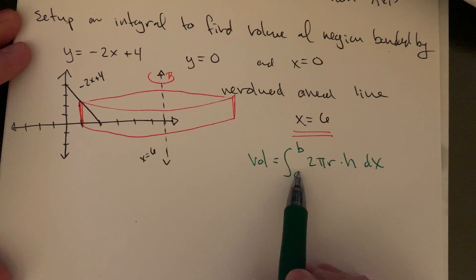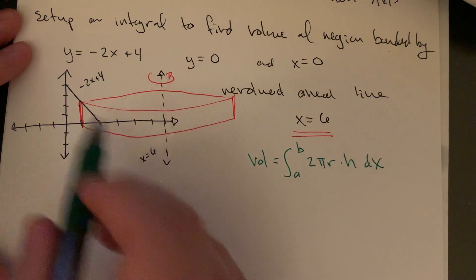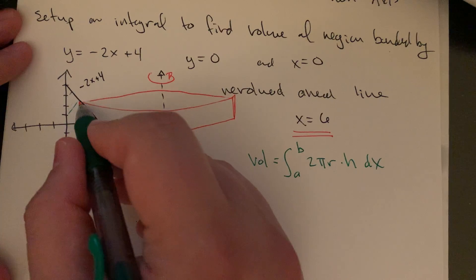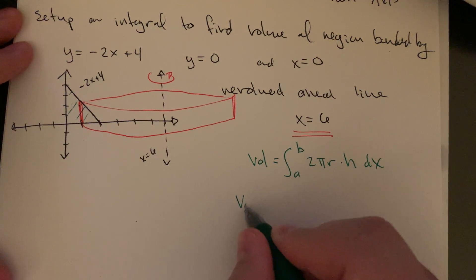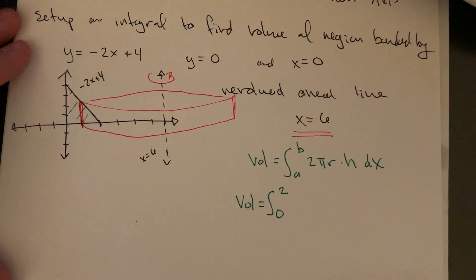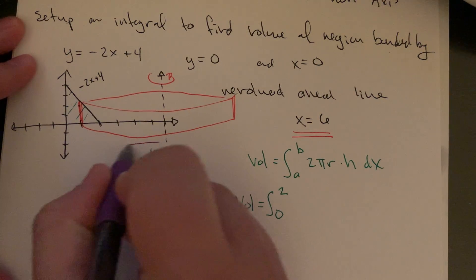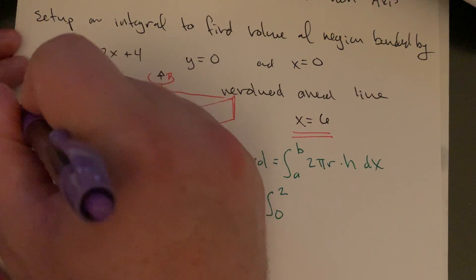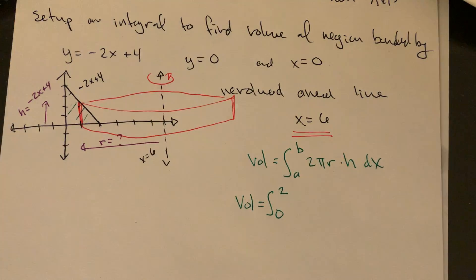Part of what we need to think about is the interval. The x interval goes from 0 to 2 — not from 0 to 6. The interval only covers the initial region. So the region for the figure is from x equals 0 to x equals 2. Even though the radius values are extending outward, the x values stay within that range. The radius is still a question mark, but the height values are the same.